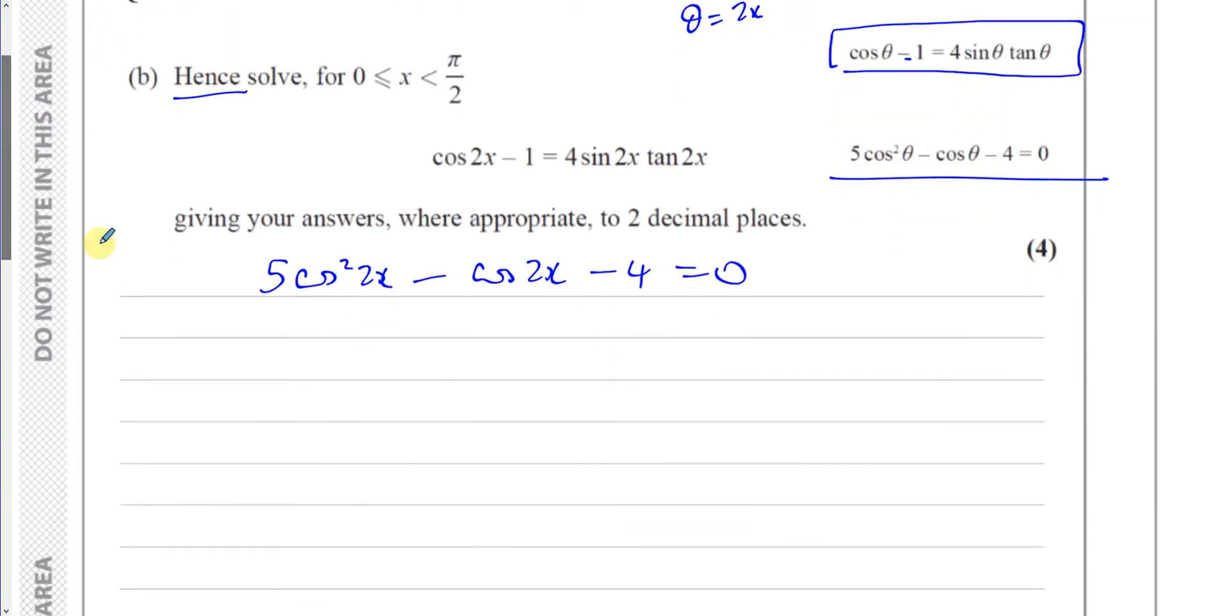This is like a quadratic equation in cosine 2x. So what we can do is, if you want to make life easy, say y equals cosine of 2x. In this case we'll say 5y squared minus y minus 4 equals 0, and we can solve this equation. It's a quadratic equation by factorizing.